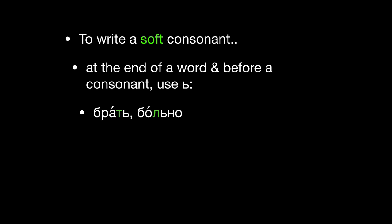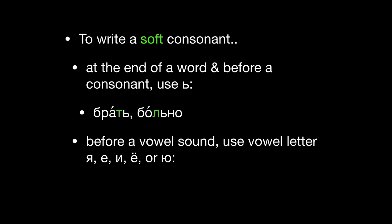Examples: БРАТЬ, БОЛЬНО. To spell a soft consonant before a vowel sound, spell the vowel sound with one of these letters: Я, Е, И, Ё, and Ю.